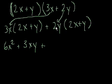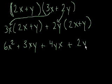Plus 2y times 2x. Well, that's 4yx, right? 2 times 2 times y times x. Plus 2y times y. Well, that's just 2y squared.